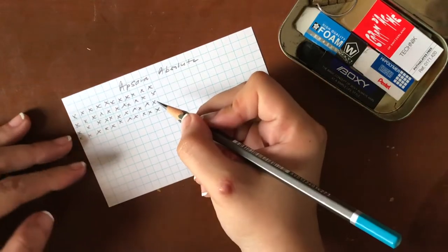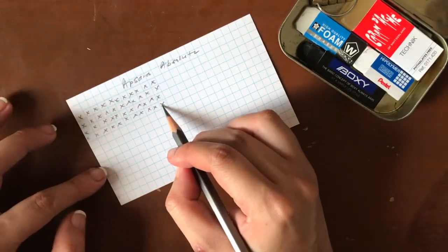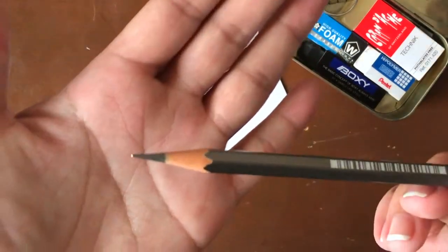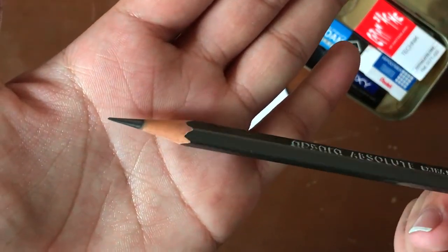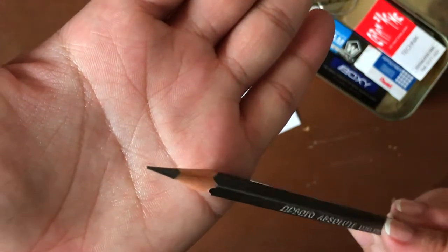So I'll show you that right now. I've just written one, two, three, four rows of X's. But look at the point. It's almost like I haven't used it. Amazing.